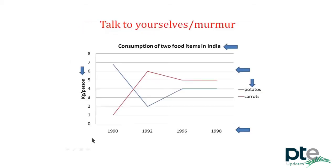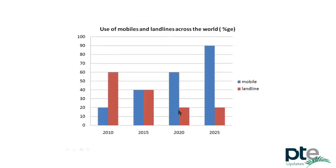For example, take this line graph. The type is a line graph. The heading is 'consumption of two food items in India' — potatoes and carrots. The x-axis runs from 1990 to 1998, and the y-axis gives units in kilograms per person. While doing that, talk to yourself because this will boost your confidence and you will memorize some of the data. For a bar diagram example with the heading 'use of mobiles and landlines across the world,' the data is in percentage, the x-axis runs from 2010 to 2015 and 2020–2025, meaning the data includes future predictions — so make sure you use future tense while explaining it.